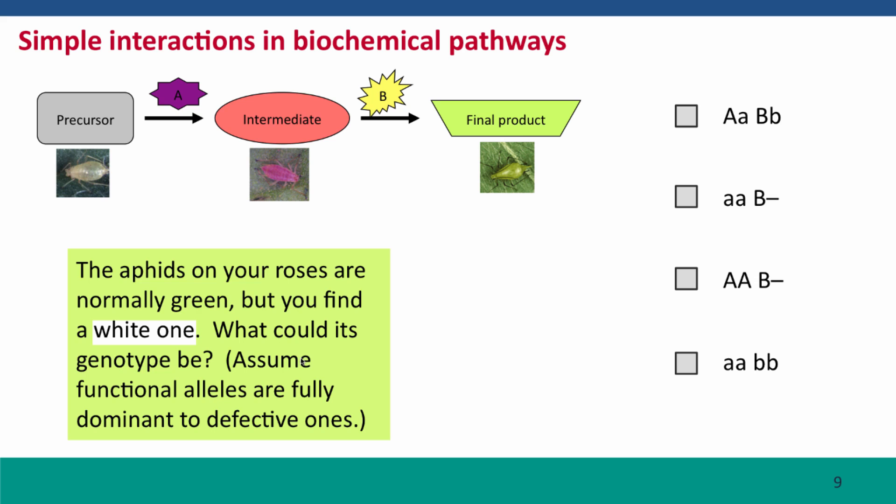Now, here's another question. Again, the aphids are normally green, but you find a white one. What could its genotype be?